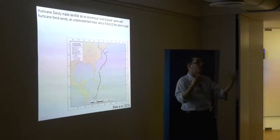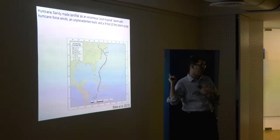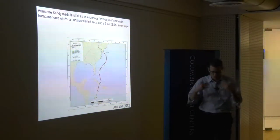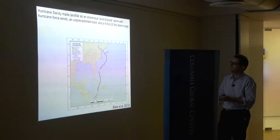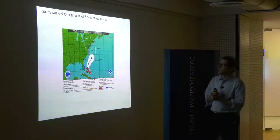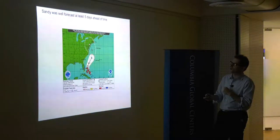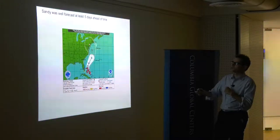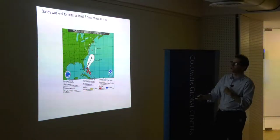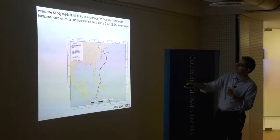Because of the size of the storm and the angle it came in, it caused a huge storm surge. Storm surge causes flooding not because of rain — it's when the wind pushes the ocean onto the land, raising the water level. That was the problem in Sandy: nine feet, or two and a half meters, of storm surge in New York Harbor, and we had the misfortune that it occurred almost precisely at high tide.